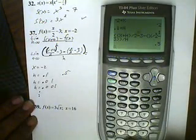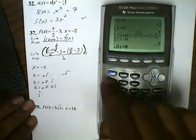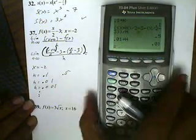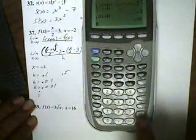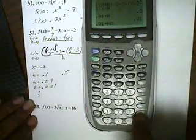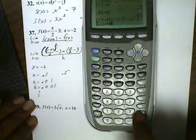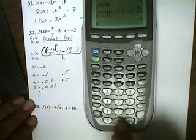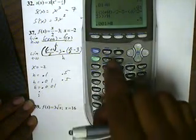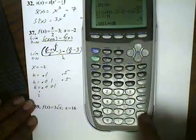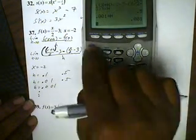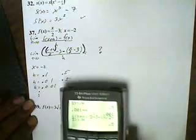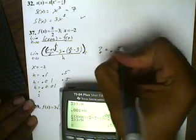Now I'm going to put in 0.01, store that into alpha H, hit enter, and bring my equation back with second function enter. And I get 0.5 again. I put in 0.001, store that in H, bring up my equation, and I'm consistently getting 0.5. So that is my slope — my slope is 0.5.